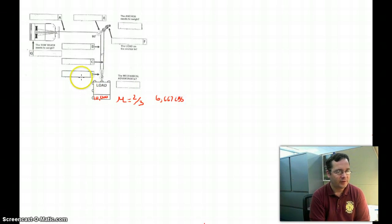Now, if you look at point D, it's showing how much tension is present in this hook here, and it's equal to the amount of force it takes to slide this load. So 6,667 pounds.